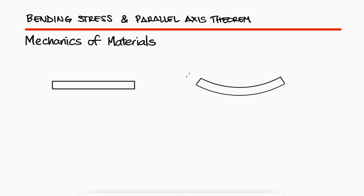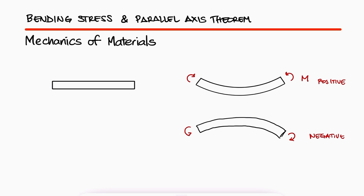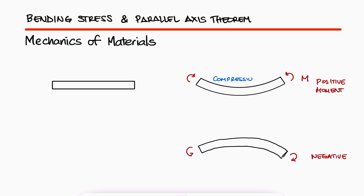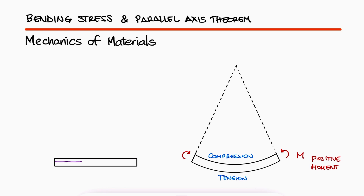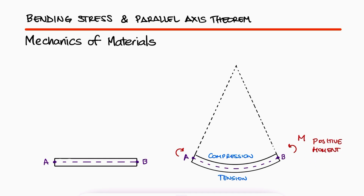When a simple beam is subjected to what we define as a positive moment, the deformed state of the beam will look like a smile. A negative moment will make the beam deform in the opposite way. In either case, we see that one side is under compression and the opposite side is under tension. If we look at the deformed beam under a somewhat exaggerated deformation, we can see that there's one plane that has not been stretched nor compressed, and that plane is what we call the neutral axis.